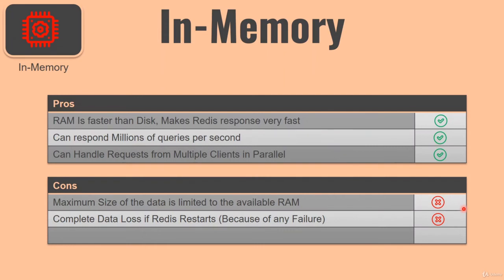To talk about some of the cons of Redis: since it keeps everything in memory in order to process any request, this means that the data size or the data set is going to be limited to the amount of RAM available on the server. For example, if you have only 500 GB of RAM available on a server, then by no means can you store more than 500 GB of data in Redis, because Redis has to keep everything in memory and it will not allow you to store that much data due to the memory limitation on the server.